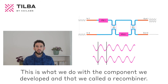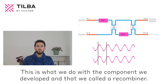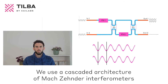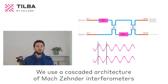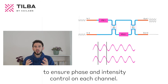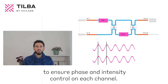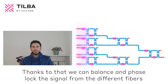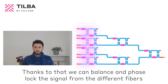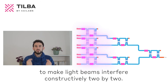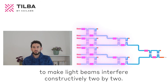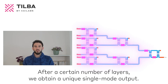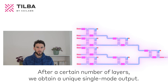This is what we do with the component we developed and that we call a recombiner. We use a cascaded architecture of Mach-Zehnder interferometers to ensure phase and intensity control on each channel. Thanks to that, we can balance and phase-lock the signals from the different fibers to make light beams interfere constructively two-by-two. After a certain number of layers, we obtain a unique single-mode output.